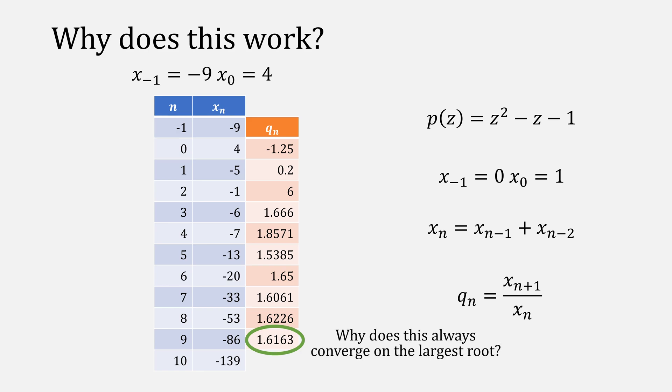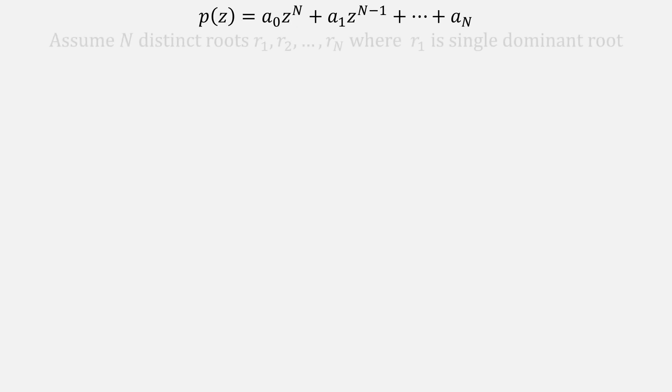And you might be asking why does it always converge on the largest root? Starting with our polynomial, let's simplify the problem by assuming that there are n distinct unique roots, r1, r2, etc., where r1 is our single dominant root, written this way to say that it is larger than all other roots in absolute value.